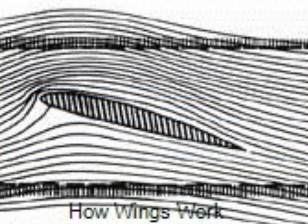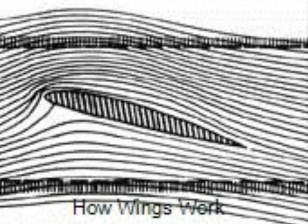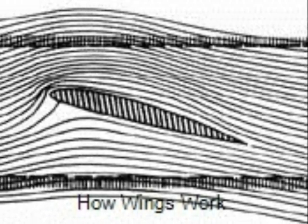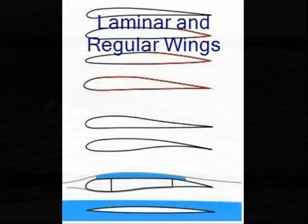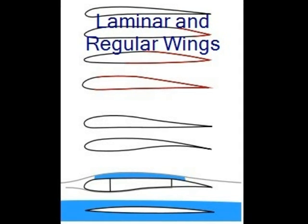Here's a picture of how wings work. They work off a pressure differential in which there is less pressure above the wing than below it, and the wing is therefore sucked up into the partial vacuum. Pictured are laminar flow and regular wings. The bottom wing is a laminar flow wing, and the top wing is a regular wing.